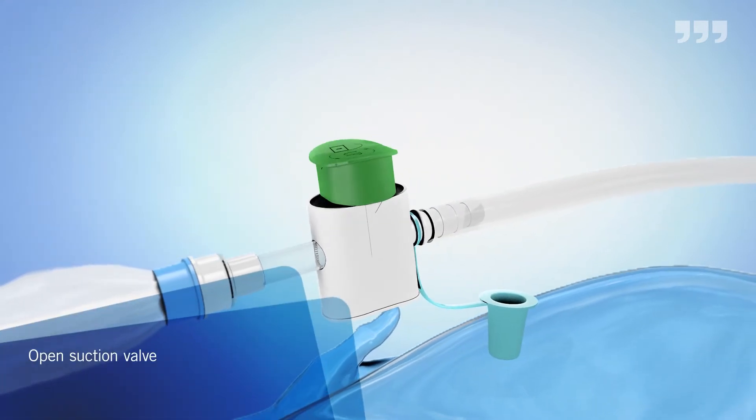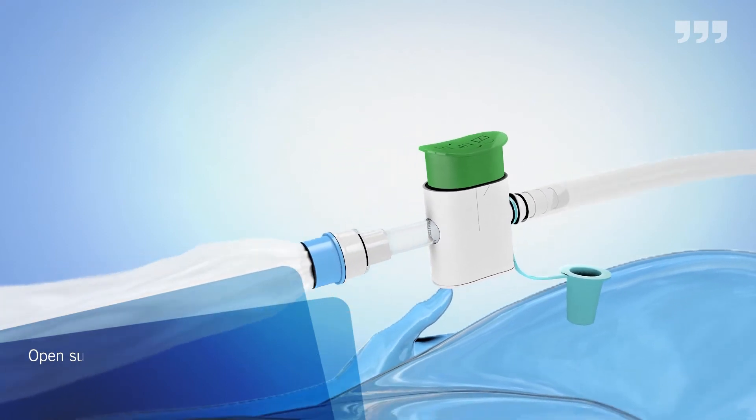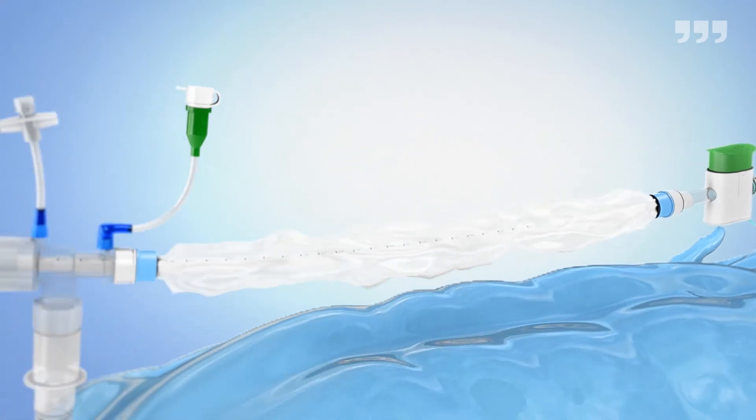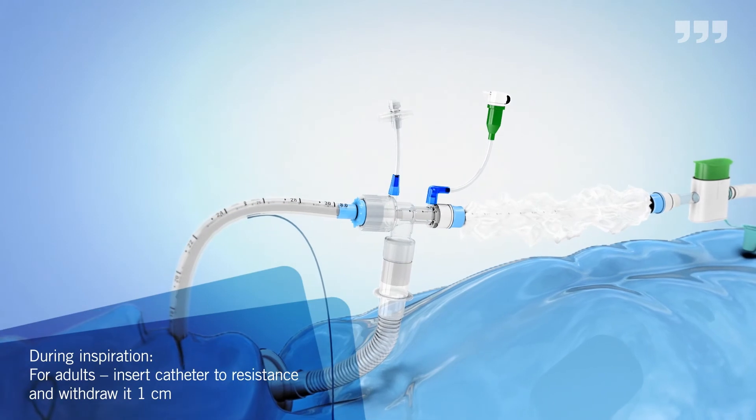Open the suction valve by rotating it halfway. Insert the catheter during inspiration until resistance is met and then withdraw 1 cm.